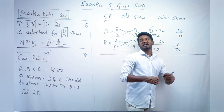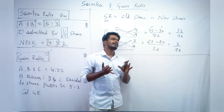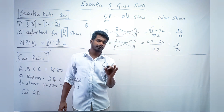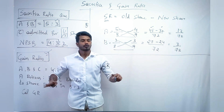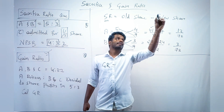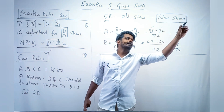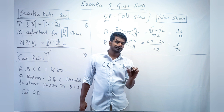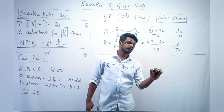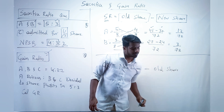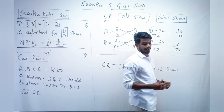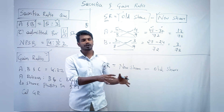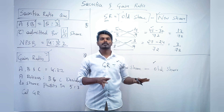Shall we go for the gain ratio? It is similar, but the formula changes slightly. The formula for gain ratio is: new share minus old share. Just interchange the ratios used in sacrifice ratio — in sacrifice ratio it was old minus new, in gain ratio it is new minus old.